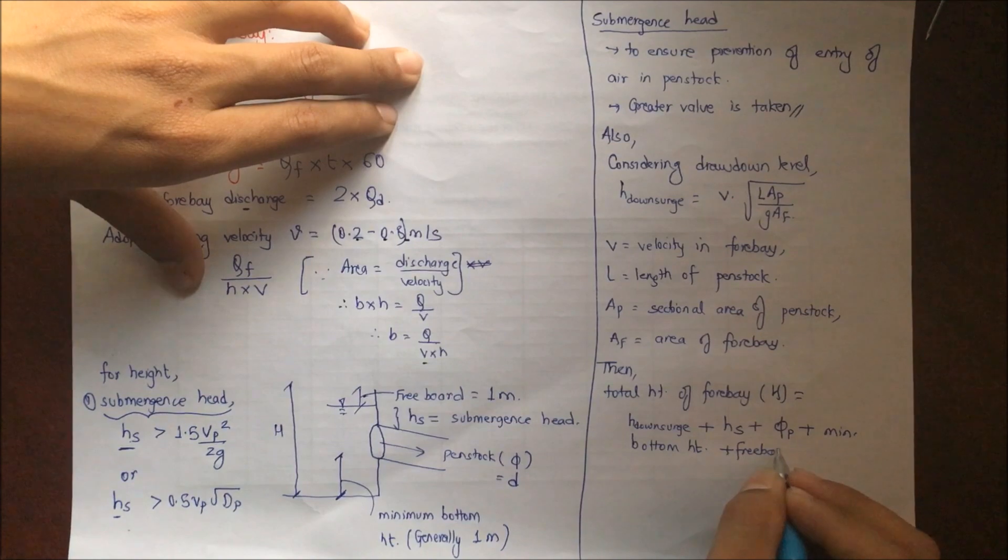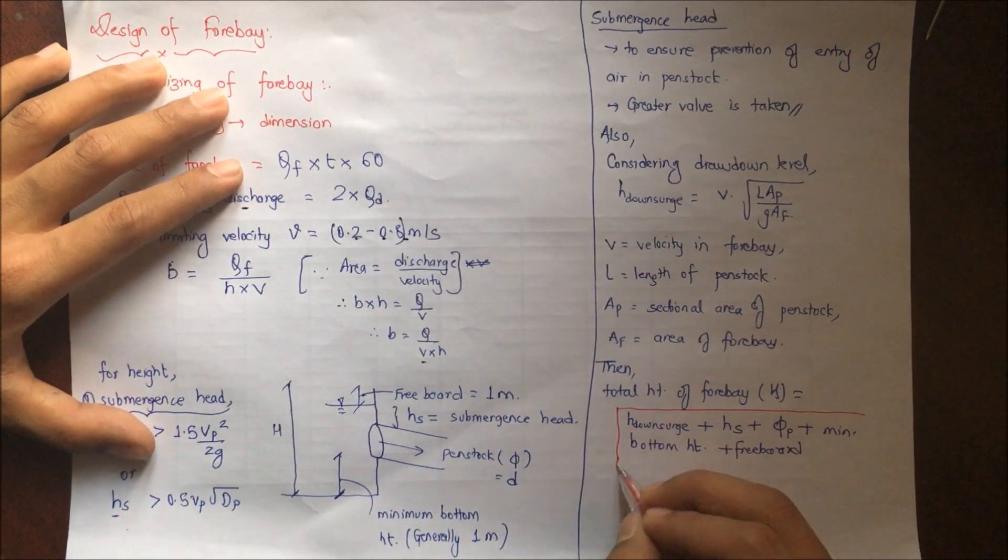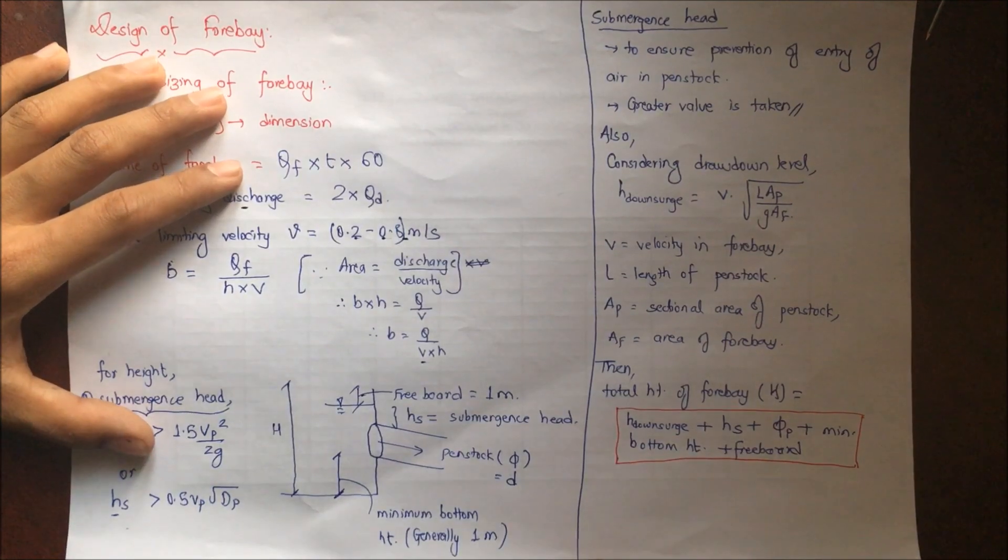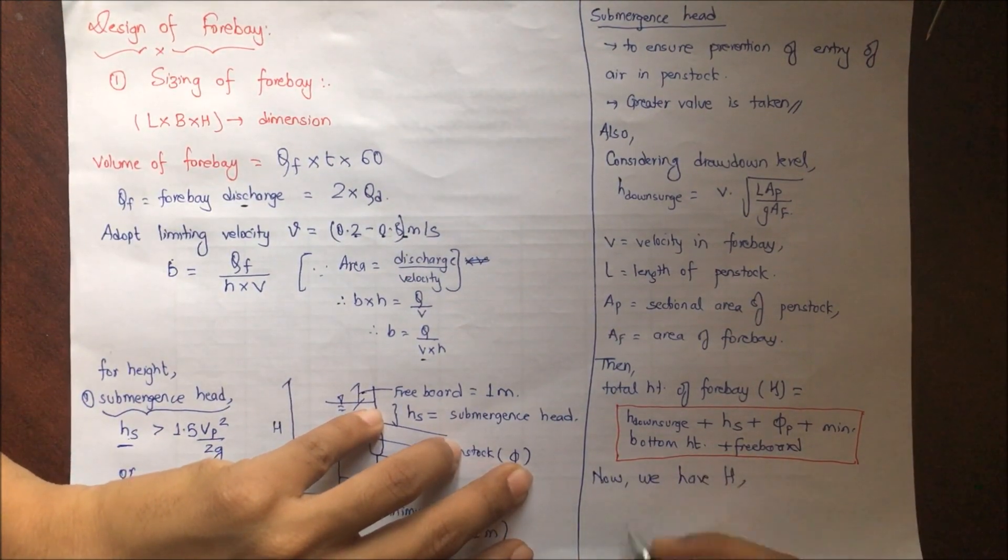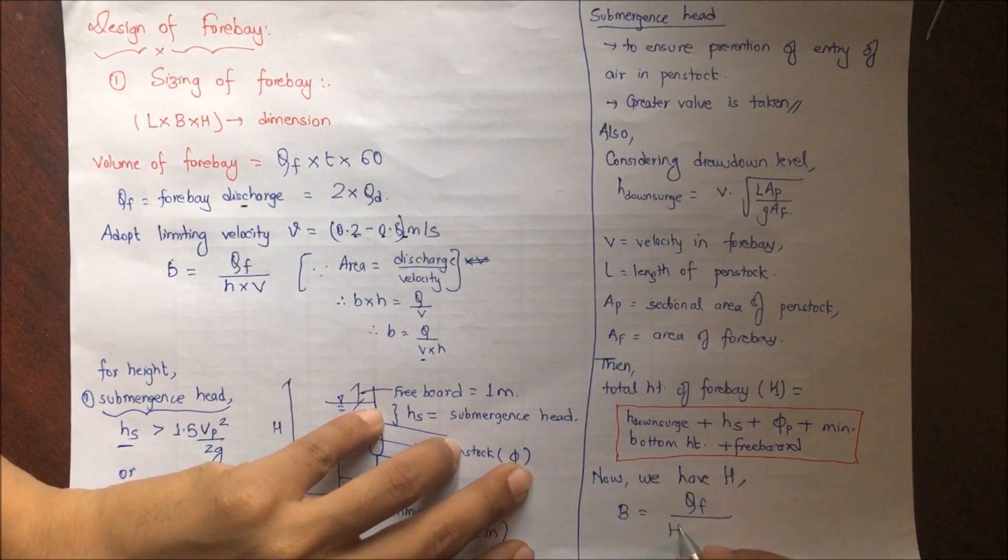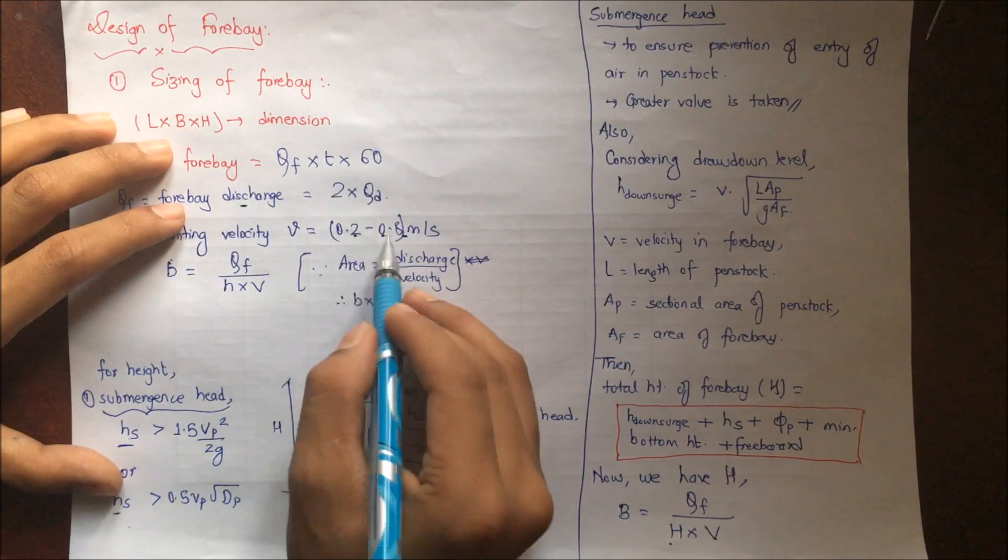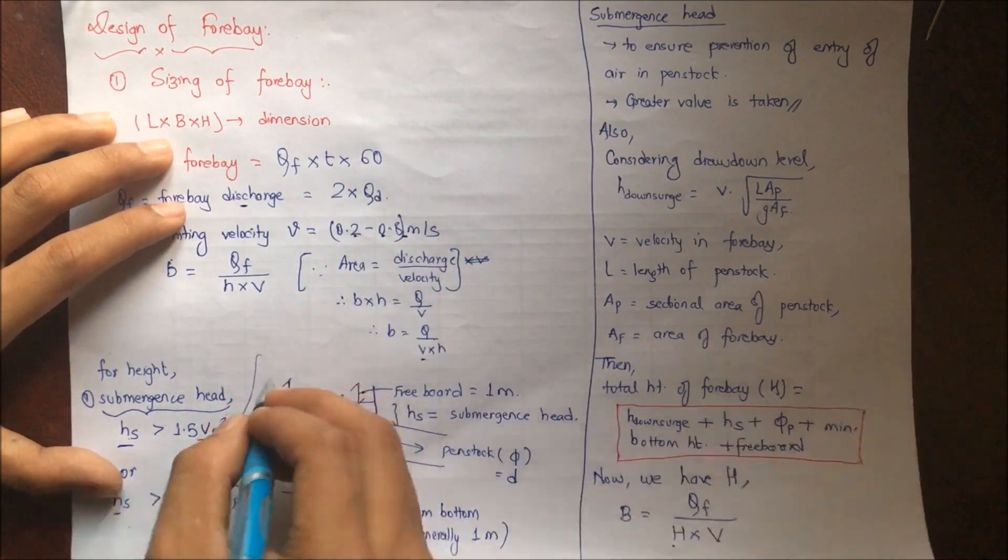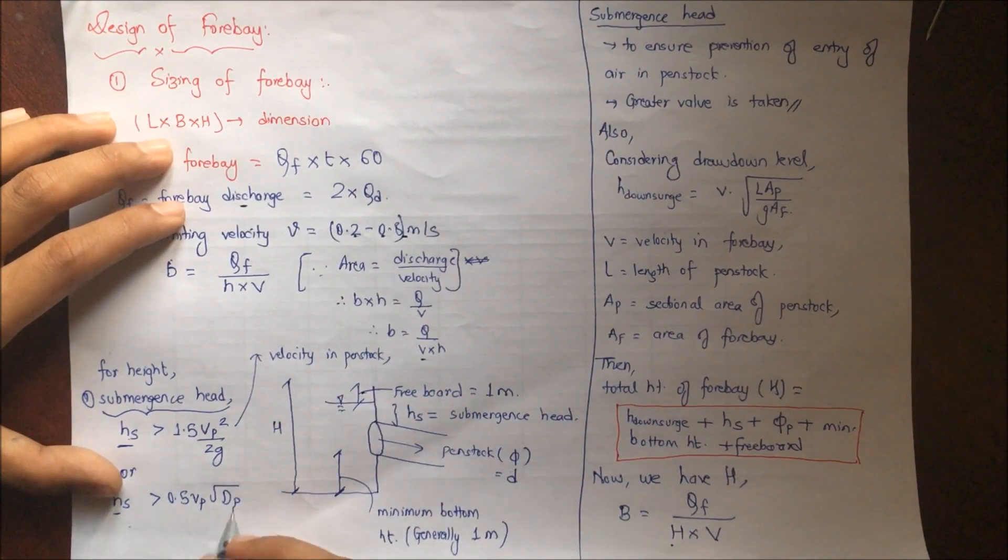Now we have H, so we can calculate the value of B. B = Qf/(H×V), V is the limiting velocity, and Vp is the velocity in penstock for which we will be using the design value that has been provided, that is Qd, and D is the diameter of penstock.